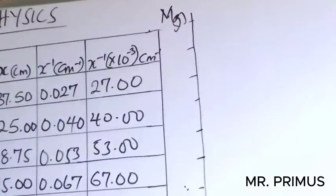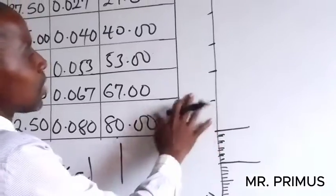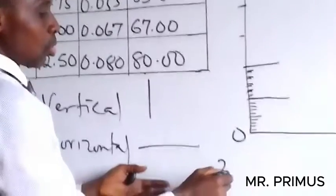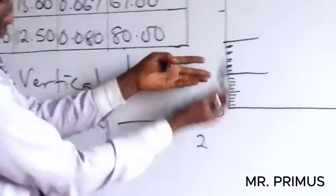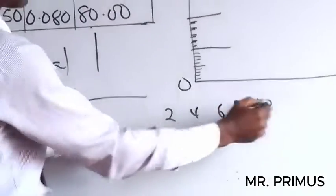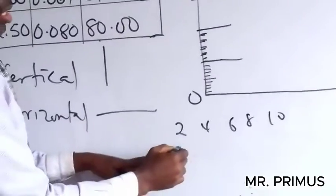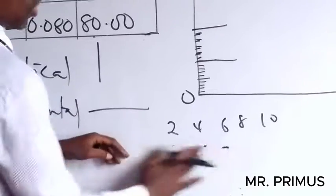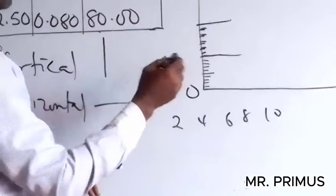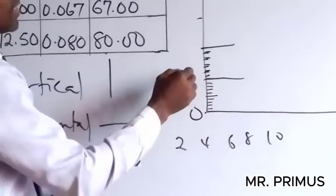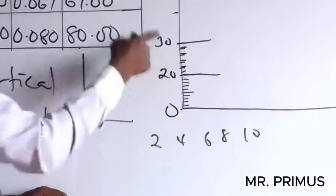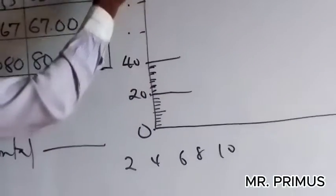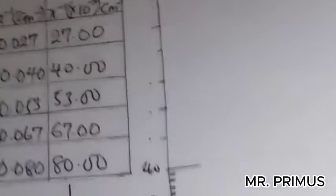In choosing the scale values, you have to look for numbers that are divisible by 10. Use even numbers — you can use 2, 4, 6, 8, 10. Don't use numbers that are odd like 3, 6, 9 — this will be difficult. It is not good to have inconsistent spacing. From here to here it is 20, so this place will be 40, 60, 80, 100, 120, and upwards. I hope that is clear.